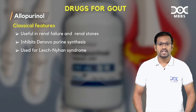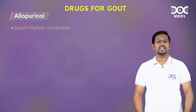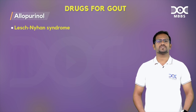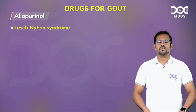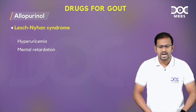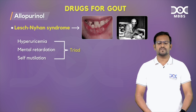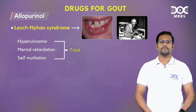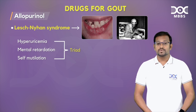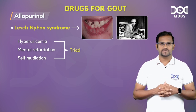Allopurinol can also be used for Lesch-Nyhan syndrome. Lesch-Nyhan syndrome presents with a classical triad: hyperuricemia, mental retardation, and self-mutilation. In terms of the hyperuricemia component, we can use allopurinol in those conditions.